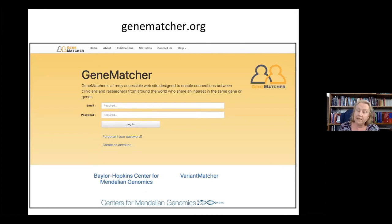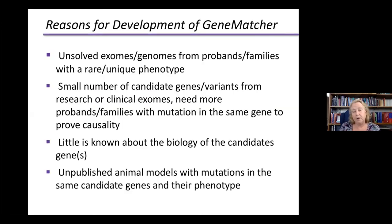Many times when you do that sequencing, you identify one or a few good candidates, or you are pretty sure this is the right gene because of variants segregating in a family, but you only have one family, and that's usually not enough evidence to make the case. GeneMatcher was developed to find other people around the world who may have other families or patients with variants in the same gene, and ideally the same phenotype, to confirm causation.